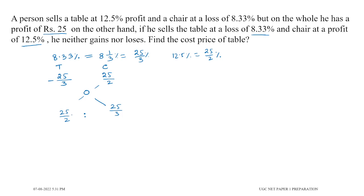If we multiply 6 by 2, the common factors cancel, then we subtract. So how to do this: we change 6 to 2 and take 2, then we get the ratio 3 to 2. So we take this ratio for the table and chair.